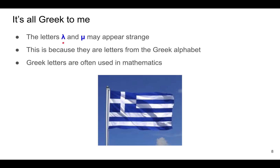In case you're wondering about the strange letters lambda and mu, these are actually letters from the Greek alphabet, which is why they look a little bit strange. In mathematics, Greek letters are often used to denote variables. So if you find that a bit strange, well, get used to it.